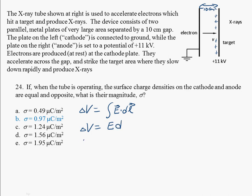We get a nice expression for the electric field: it's just equal to the change in potential divided by D, so 11,000 volts divided by 0.1 meters.